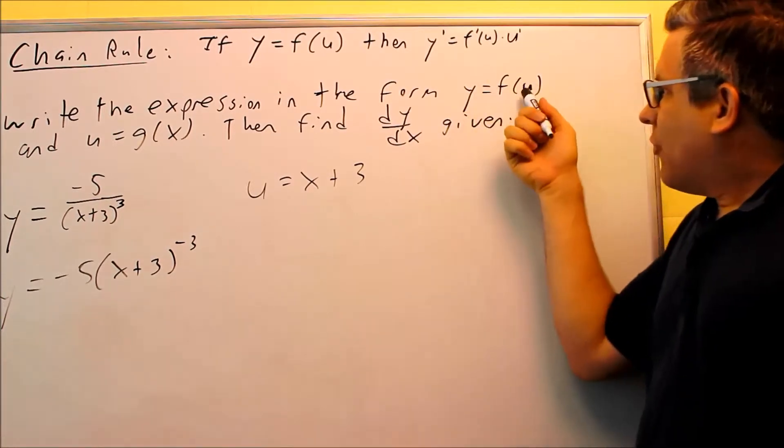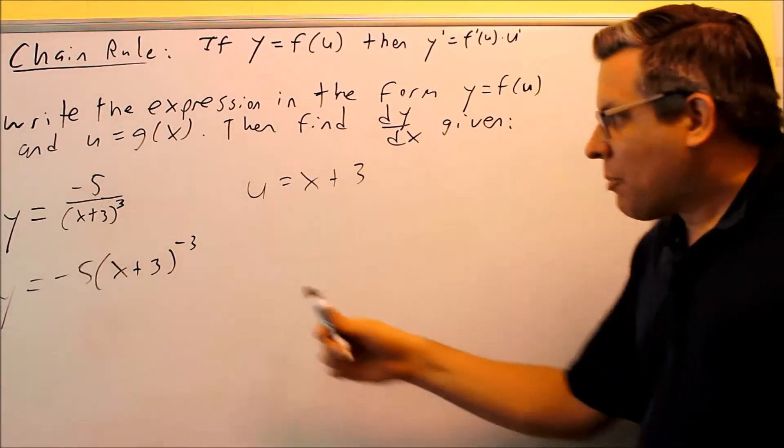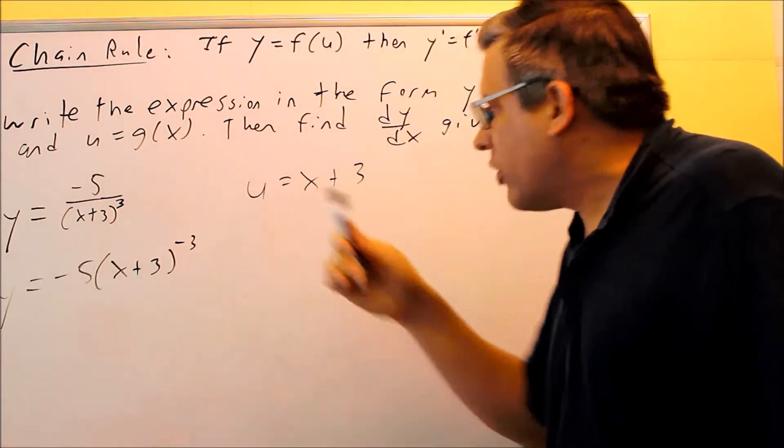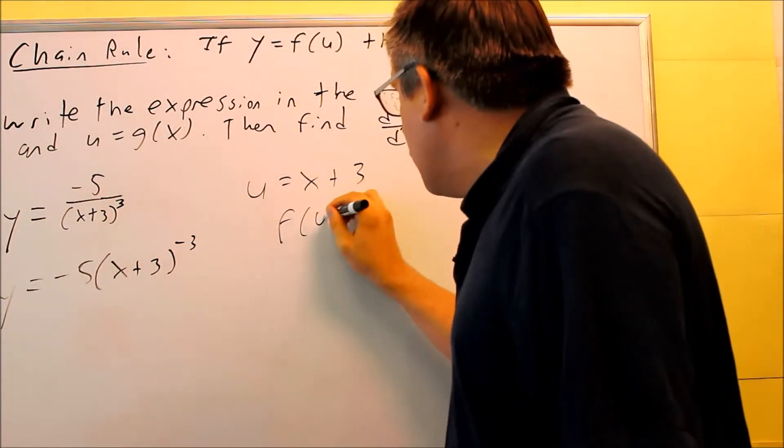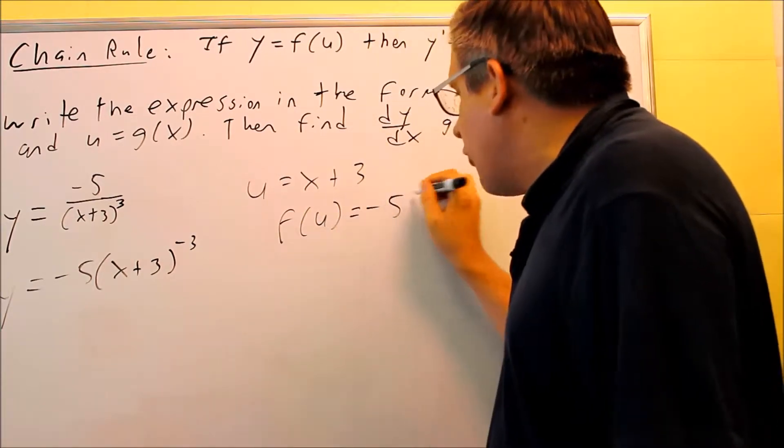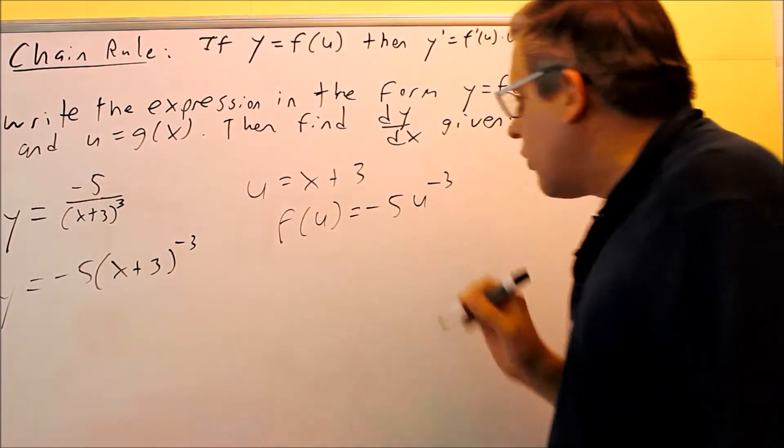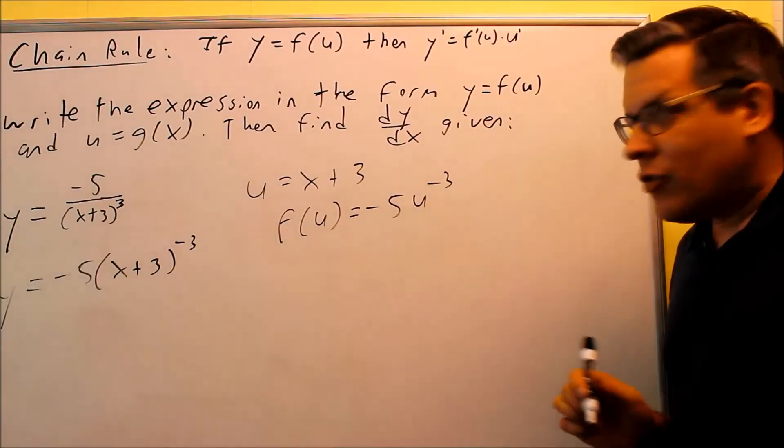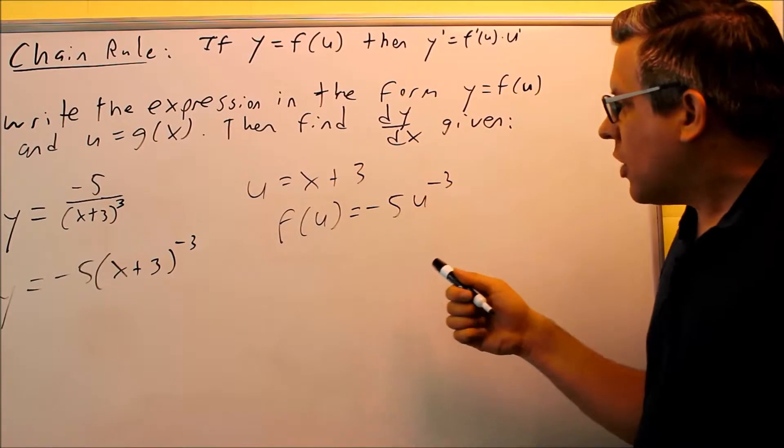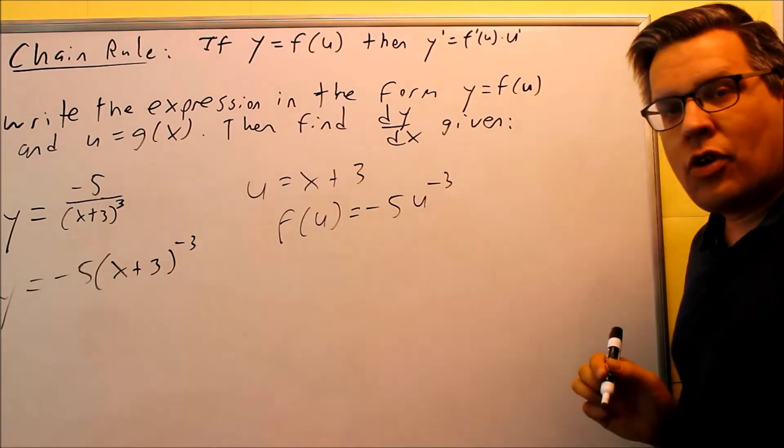If I want to find f of u, what happens is I'm going to replace the x plus 3 with the u, and so then my f of u would be negative 5u to the negative 3, or I could simply write it y equals negative 5u to negative 3. So here's my inside function, that's my u, here's my outside function.